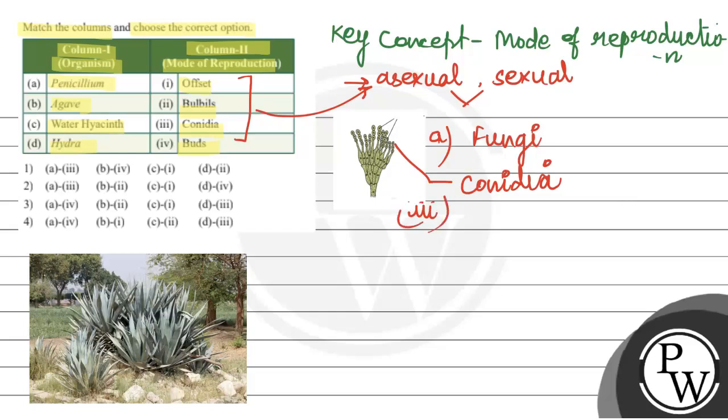Next, second is Agave. Agave reproduces through bulbils. Bulbils reproduce here, so this also is asexual type of reproduction because there are no gametes.